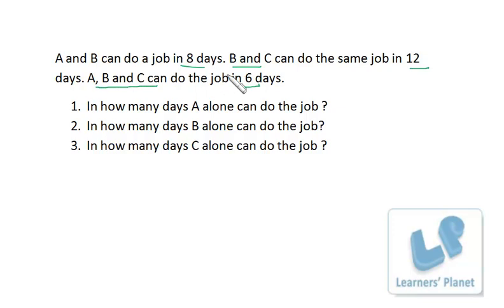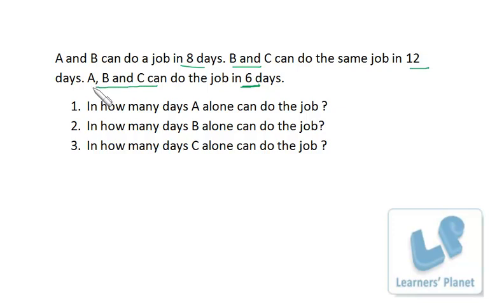Listen carefully. B and C take 12 days to complete the work. That means in 6 days, B and C working together will do half of the work — that is 6 by 12, half of the work. And since the work is completed in 6 days, B and C are doing half of the work. That means A is also doing the other half of the work — so A is doing half of the work in 6 days.